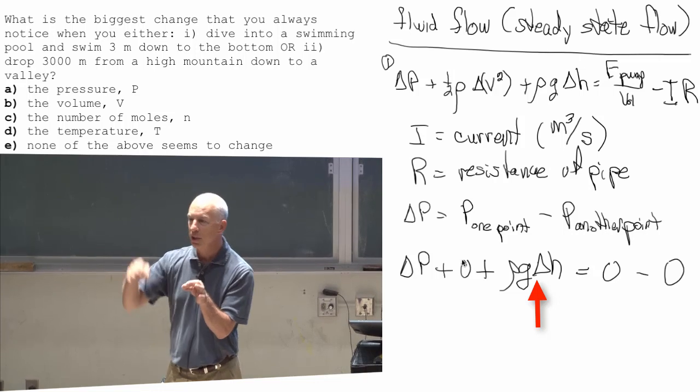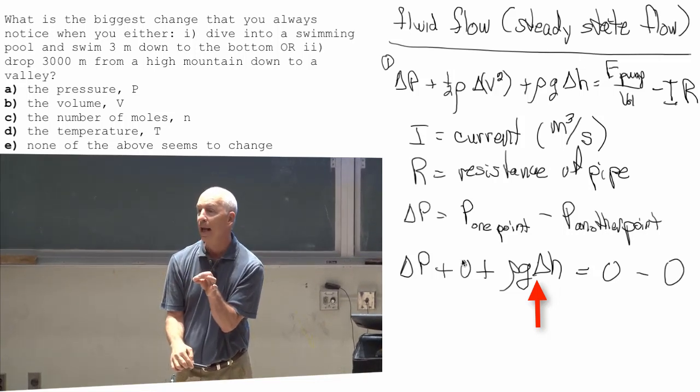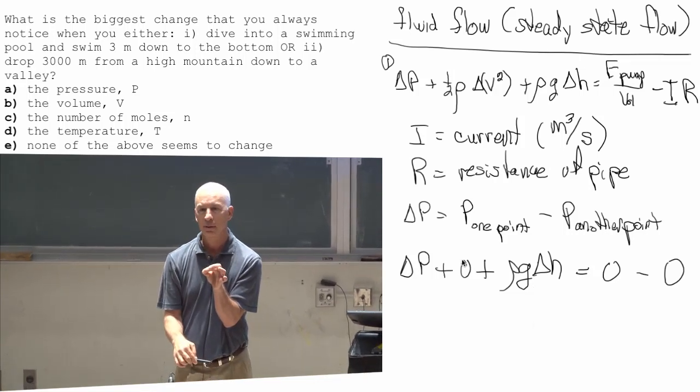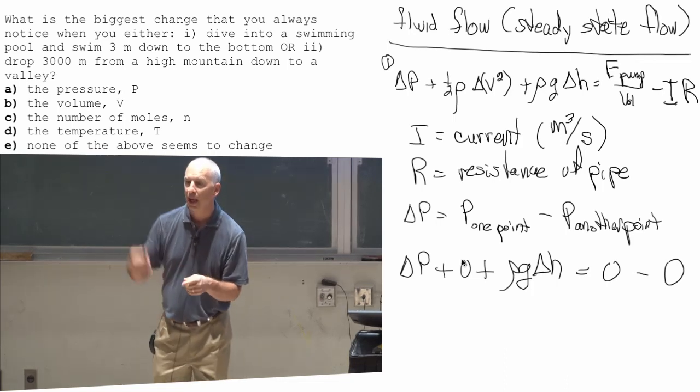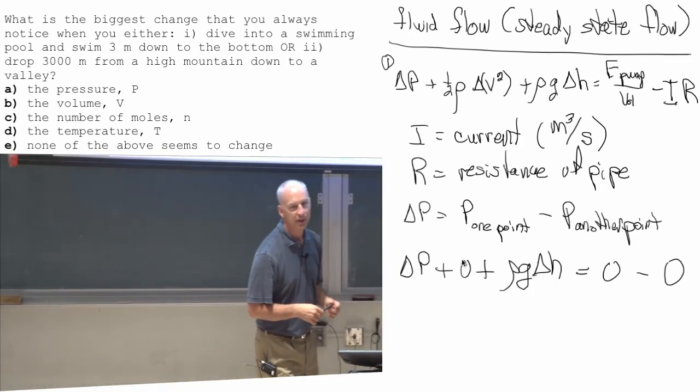Gravitational potential energy, when you go three meters down, goes down. Pressure, up. One goes down, one goes up. This is how you can calculate the pressure difference.